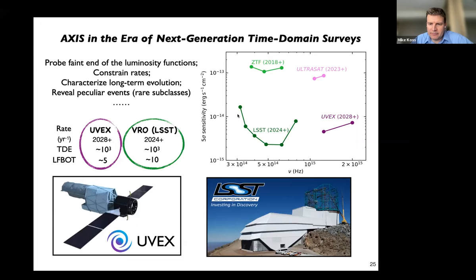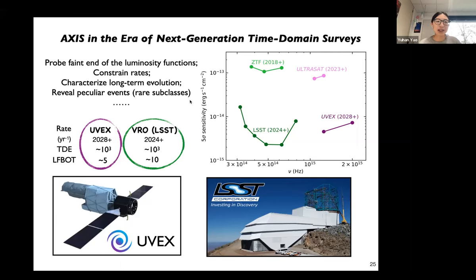Wen-Fai Fong asked about the QPO in AT2018cow: if it has a spin period, then it cannot be a magnetar. I think Wen is much more familiar with the QPO in cow because he's the second author of the paper. If we believe it's the spin period, then the black hole scenario might be more plausible. But I don't think we have a solid answer for the nature of the central engine.